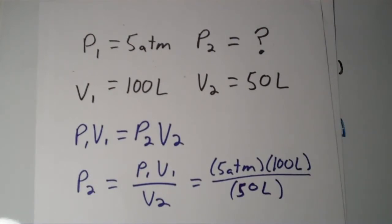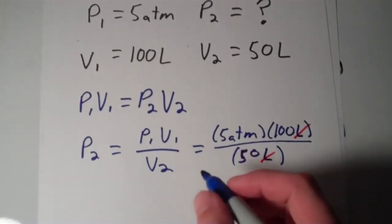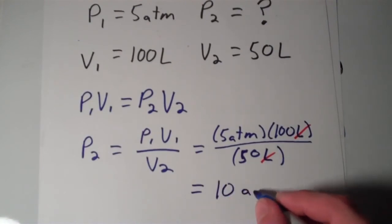And the liters cancel here, and we're left with nothing but atmospheres, the unit of pressure, which is good. So 5 times 100 divided by 50, that looks to me like that's going to be 10 atmospheres.